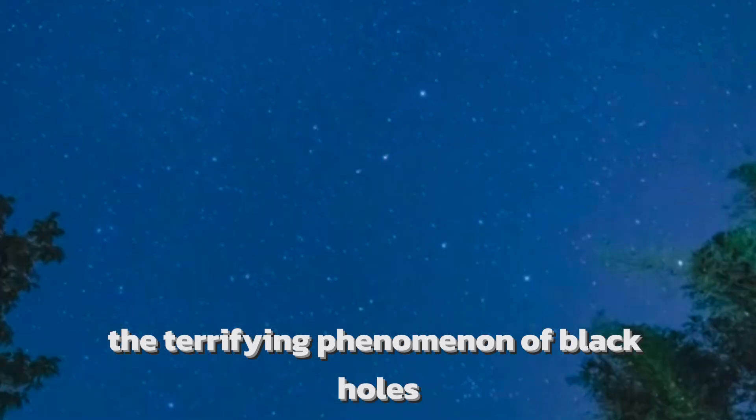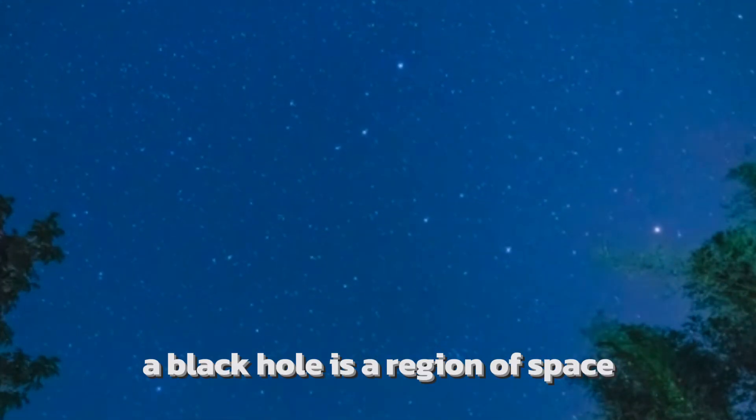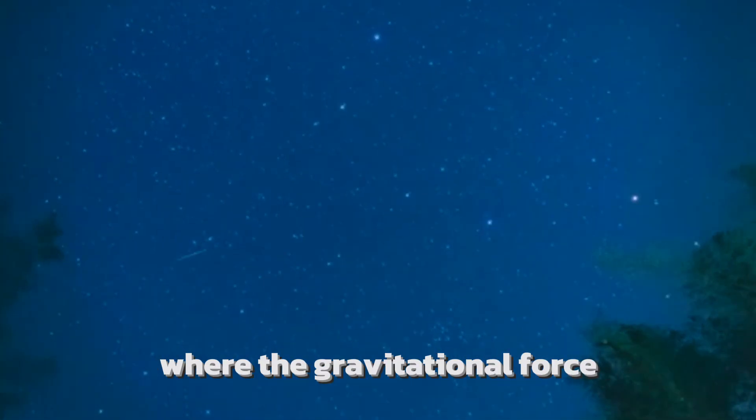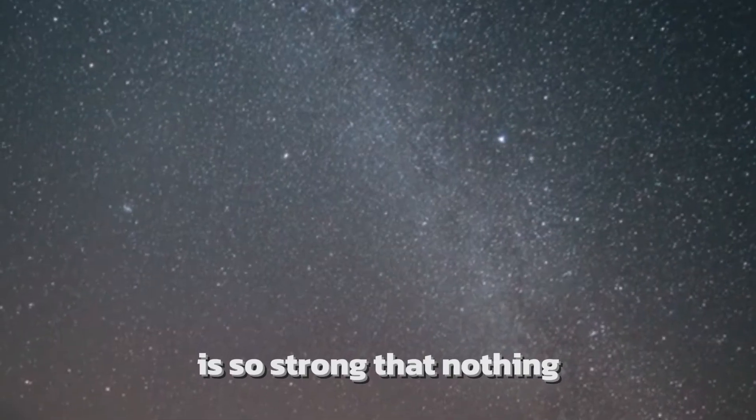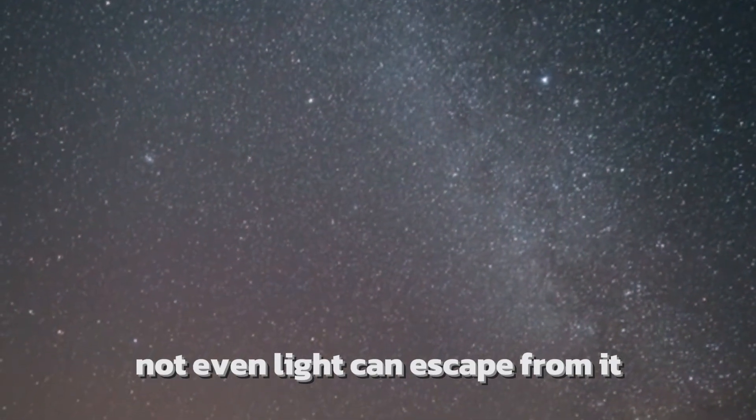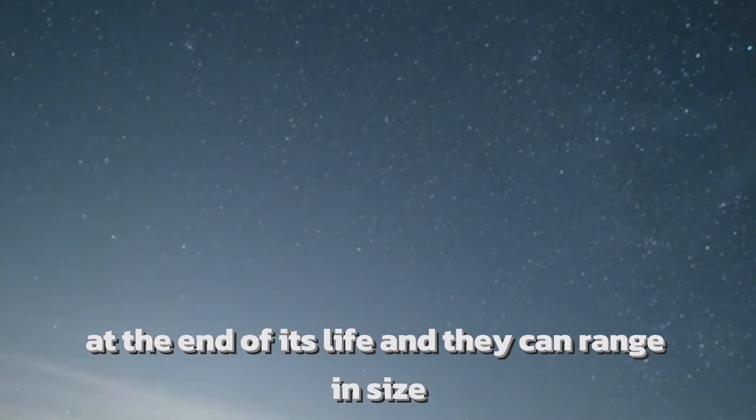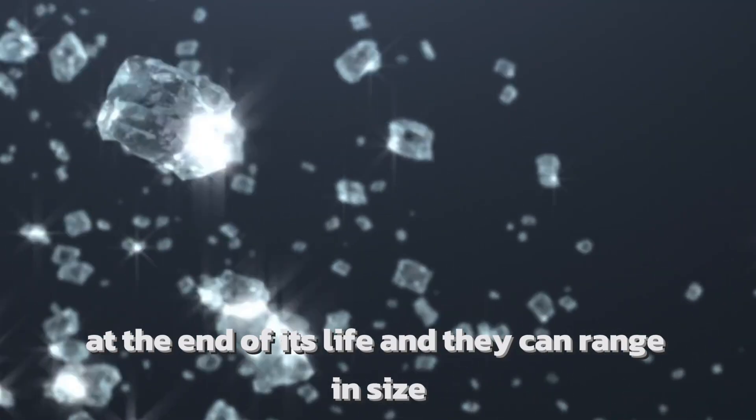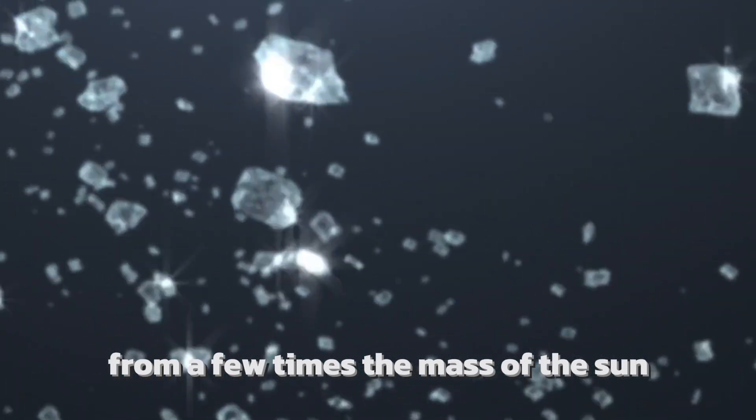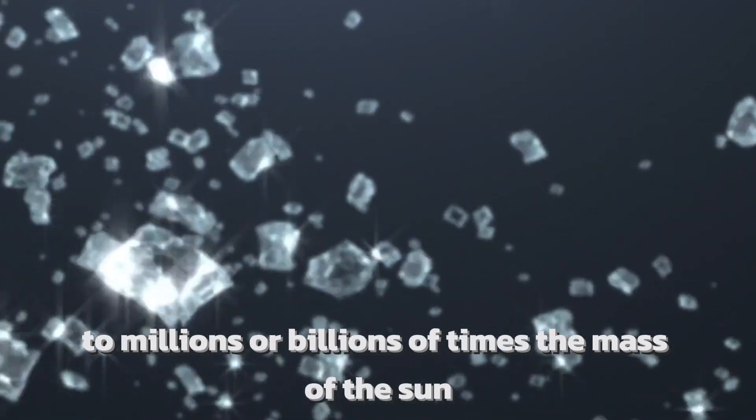Does black hole exist? A black hole is a region of space where the gravitational force is so strong that nothing, not even light, can escape from it. Black holes can be formed when a star collapses at the end of its life and they can range in size from a few times the mass of the sun to millions or billions of times the mass of the sun.